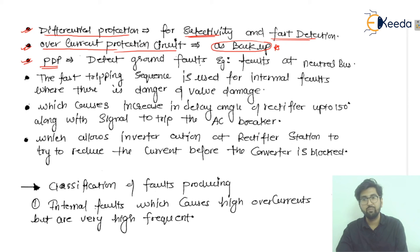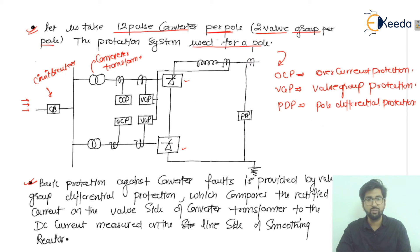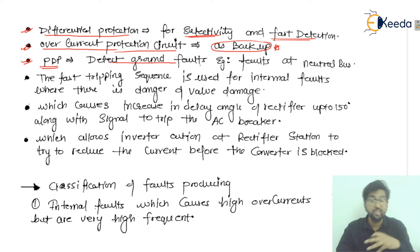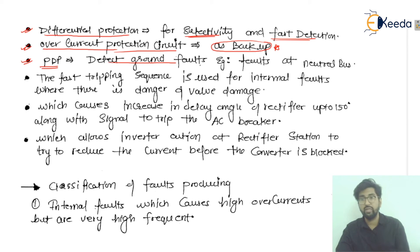PDP stands for pole differential protection, connected between these two points. It detects ground faults — for example, faults at the neutral bus. Detection of ground faults is sometimes not possible otherwise, so PDP is used specifically for detecting ground faults at the neutral bus.